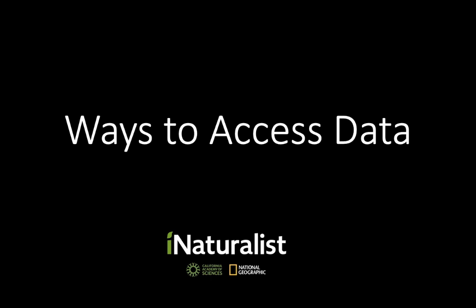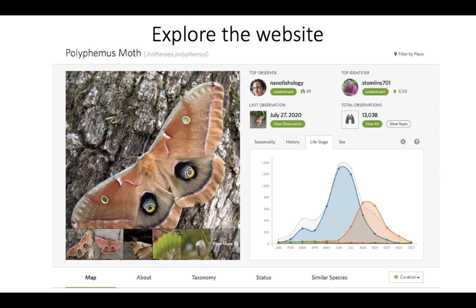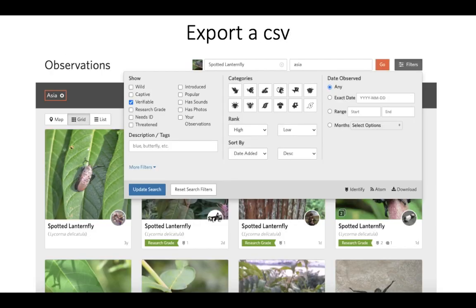If you want to explore data yourself, you can explore some data on the website. For example, you can see across its entire range when different life stages of the polyphemus moth tend to be observed — blue in this graph indicates when adults are visible, orange indicates when caterpillars are found, and the other two life stages are much less prominent. Some exploration you may be able to do right on the web.